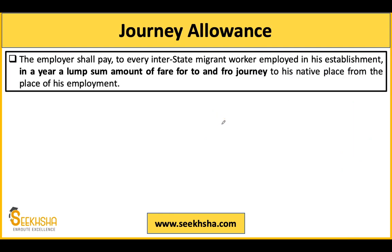One provision is about journey allowance: the employer must give every interstate migrant worker a lump sum amount every year so they can travel to their native place and back. It is a lump sum because the amount will depend on how far the worker's home is from the place of work.